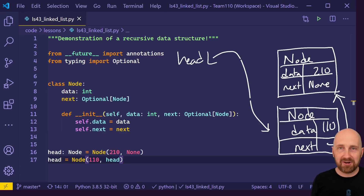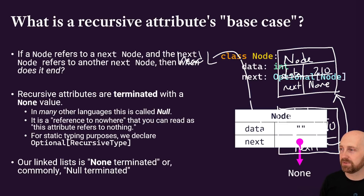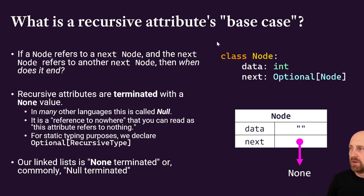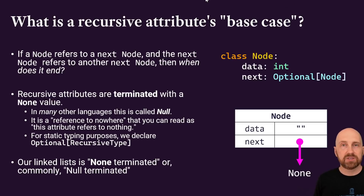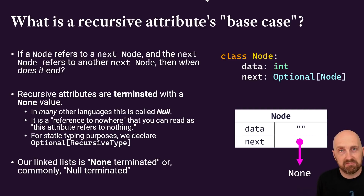You can already tell this is way more cumbersome than working with a list directly — but this is going to give us great practice for working with references and recursive algorithms. That's the base case of a recursive data type: once one of your attributes that expects to refer to another object of the same type actually doesn't refer to any object at all, you've reached your base case.